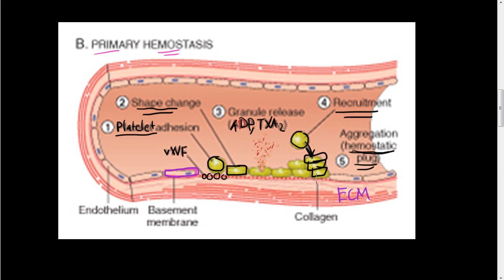This hemostatic plug is a temporary solution — not a long-term fix, just a short-term fix. It happens very quickly to stop bleeding, stop hemorrhaging, and stop blood from leaking out into the tissues. That is called primary hemostasis. This is all because of the endothelium and the cell wall events that initiate this hemostasis, stopping blood flow from oozing out into the extracellular matrix.